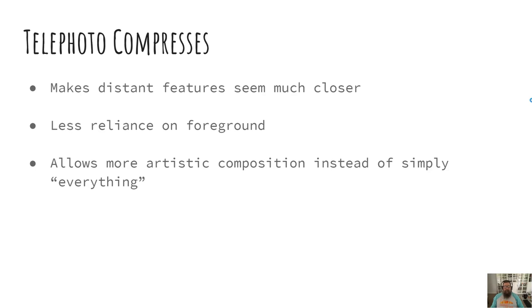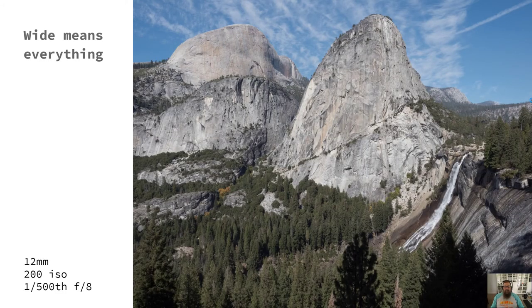I talked about the two different choices — wide and tele — and it doesn't have to be a big tele. I'll often go to 32mm or 40mm, just slightly into the tele range. It makes the distant features seem a whole lot closer and means you've got less reliance on the foreground, so you don't necessarily need that anchor. Be a little careful if you're going with a deep tele like 100mm or 150mm — if you bring an anchor into that shot it'll actually look awful. Telephoto allows you artistic freedom and some compositional discretion rather than capturing just everything like the wide lens does.